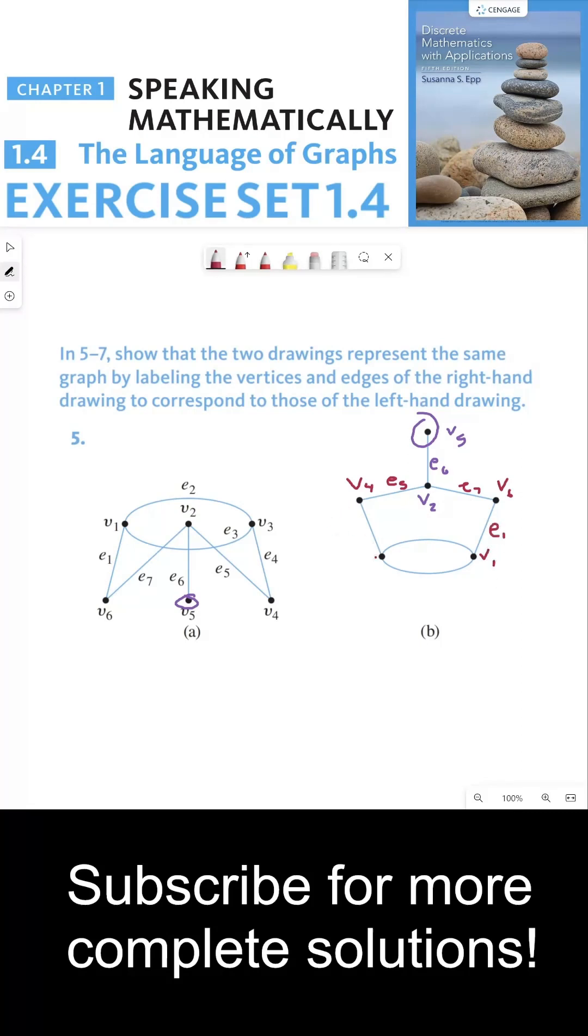v4 is connected to v3 by edge 4. And we can see according to this graph, v3 and v1 are connected by edge 2 and edge 3. So it doesn't matter which one we put for edge 2 and edge 3, so long as they both connect to v3 and v1.